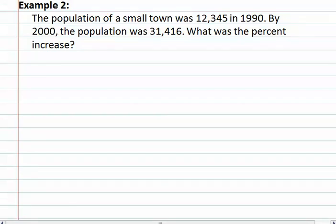Example 2 asks, the population of a small town was 12,345 in 1990. By 2000, the population was 31,416. What is the percent increase for the population?